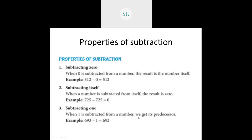So 725 minus 725 equals 0. Then subtracting 1: when 1 is subtracted from a number, we get its predecessor — the number one before the given number. So 693 minus 1 is 692, and 692 comes just before 693. These are the different properties of subtraction: subtracting 0, subtracting itself, and subtracting 1.